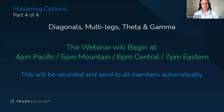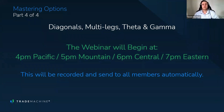Hello everyone. My name is Jason Hitchings. Thanks for joining us today. Today is going to be part four of our Mastering Options class offered by Trade Machine. Today we're going to talk about diagonals, some multi-leg spreads and some risk, including theta and gamma.